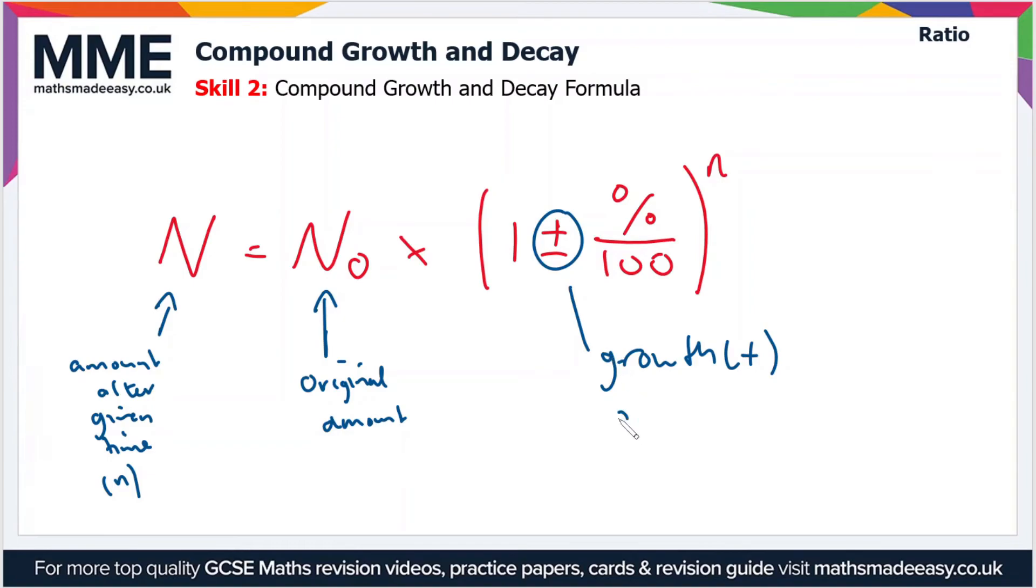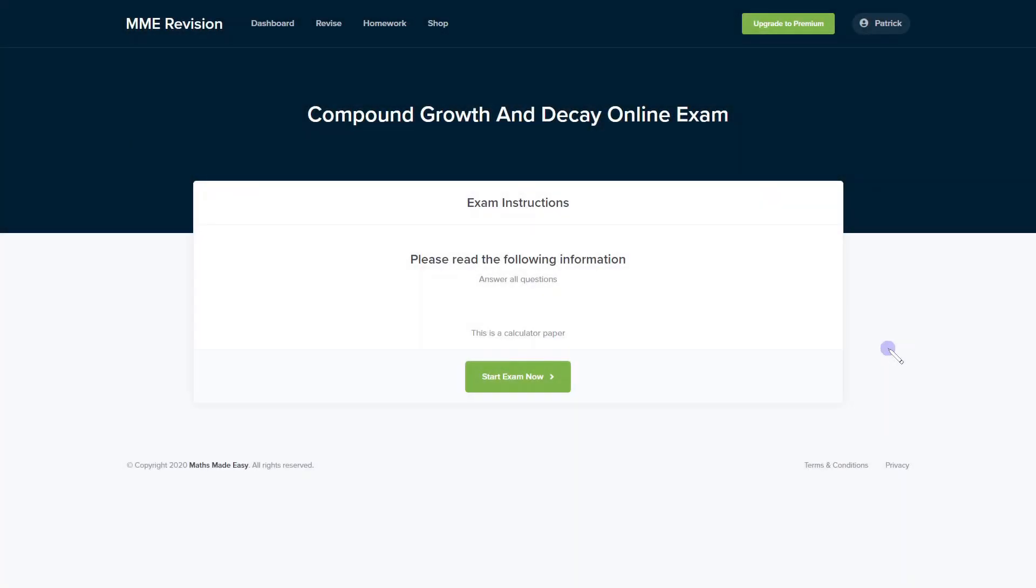Or it's subtracted when it's decay. And then finally, n is the time period - so that could be in years, it could be in days, could be in seconds, could be in weeks, it all depends on the context. Now compound growth and decay is a skill that takes some practice, especially using the formula.